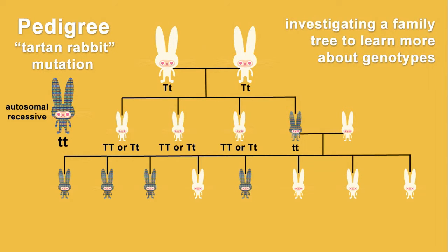Now let's look at another generation. We see that a bunch of tartan baby rabbits are produced — so does that help us determine more genotypes? It certainly does. We know that the white rabbit parent in this second generation must be heterozygous. If it was homozygous dominant, it would be impossible for any of the babies to be tartan. But this couple produced four out of eight tartan babies. Looking at the Punnett square for this cross confirms we would expect a possibility of 50% of the babies to be tartan.